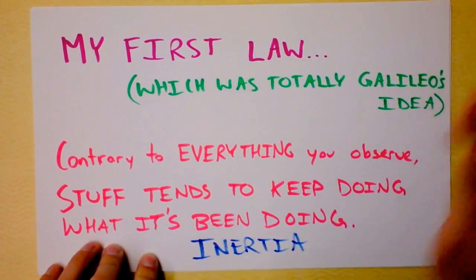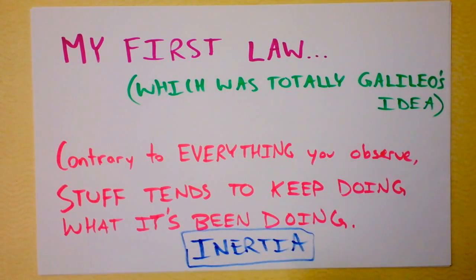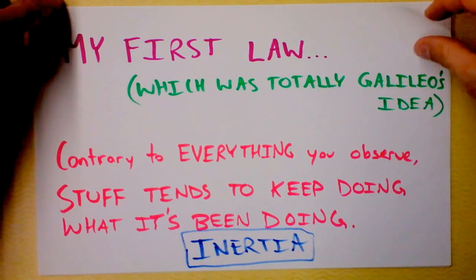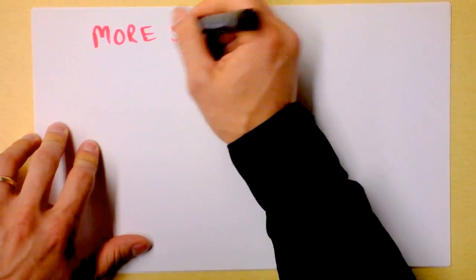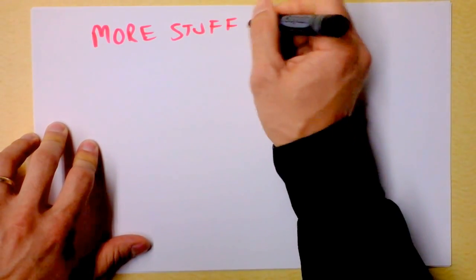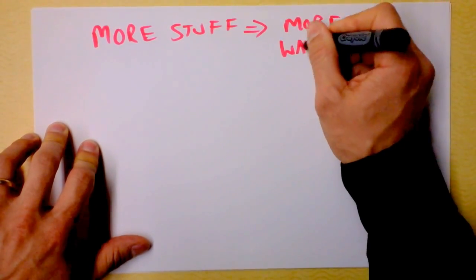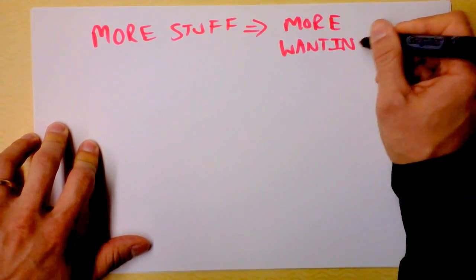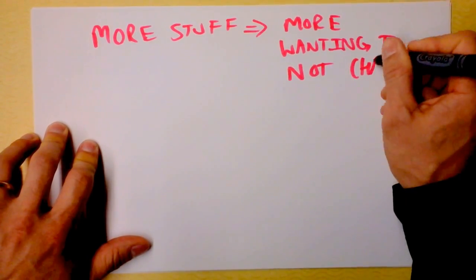This is the fat cat law. Inertia is the idea that stuff wants to keep doing what it has been doing. And inertia is connected to mass also. So what I'm trying to say is more stuff implies more wanting to keep doing, wanting to not change motion.